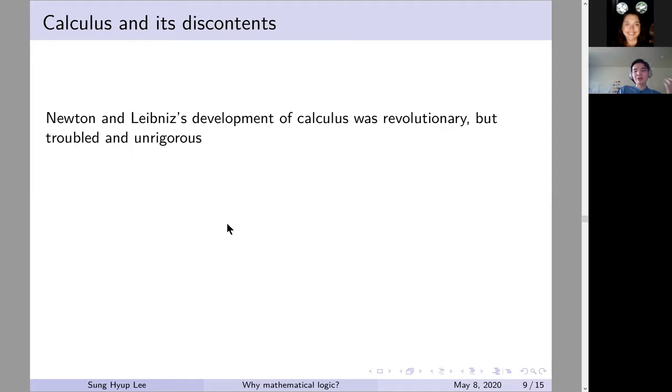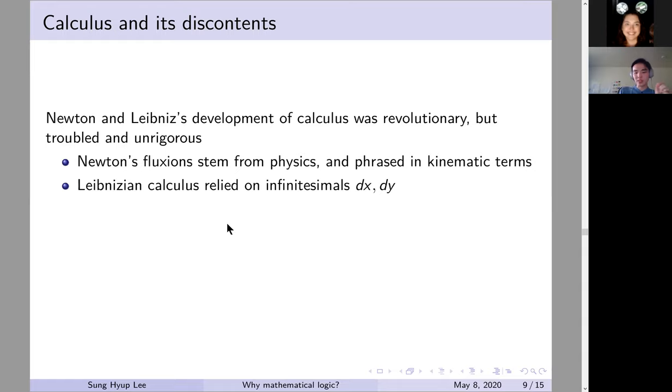So the way that Newton did his calculus, the method of fluxions, it's very linked with physics, and is phrased in kinematic terms, sort of flows and like ratios of flows, and Leibniz is similar, but more algebraic or arithmetical. He relies on infinitesimal variables, dx, dy, and using algebraic manipulations to come to derivatives as dx over dy.